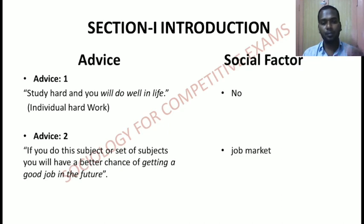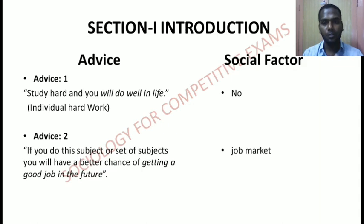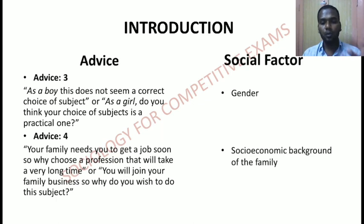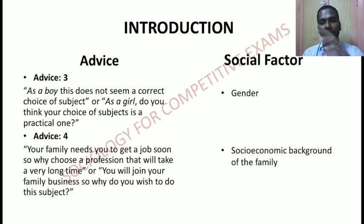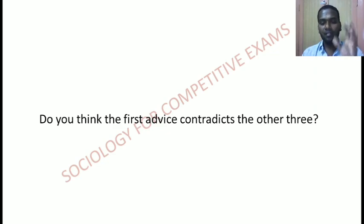Do you think the first advice contradicts the other three? Yes, because the first advice is purely about individual hard work. Advice two talks about job opportunity in the future, so the job market is a social factor. Advice three is about being a boy or a girl, so the social factor is gender. Advice four is about the socio-economic status of the particular family — and socio-economic status is a social factor influencing the individual's social status. So the first advice contradicts the other three.